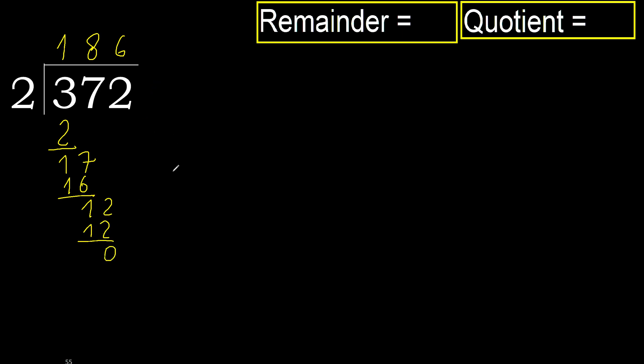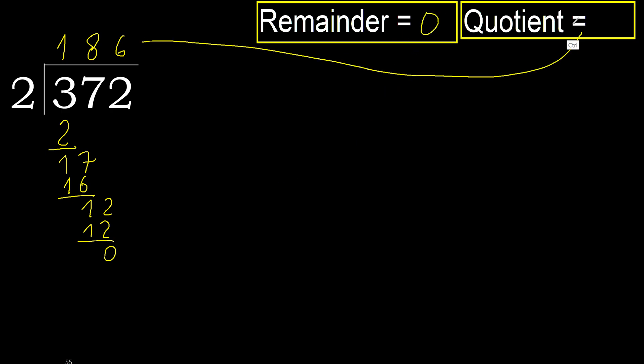That is not a number, therefore finish it. The result of 372 divided by 2 is 186. Ok.